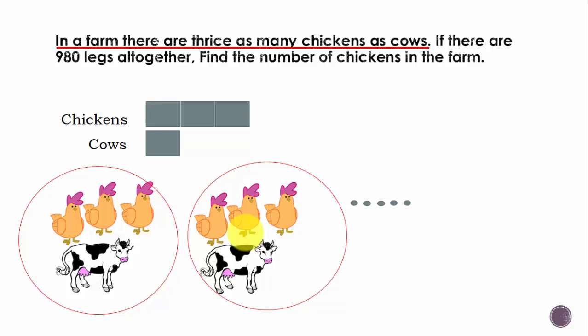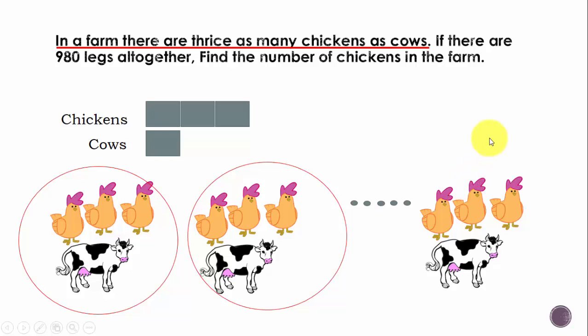And there are many such groups. There could be any number of such groups with a cow and three chickens in each of these groups. We do not know how many groups are there, but what we know is in every group for every cow there are three chickens.